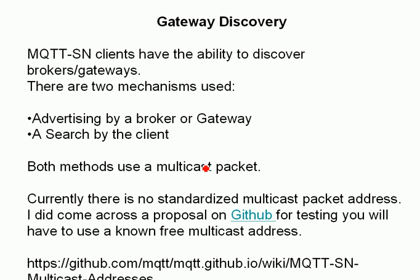For gateway discovery, there are two mechanisms: advertising by the gateway, which sends out messages saying it's a gateway and providing its address, or a search by the client. Both methods use a multicast packet.